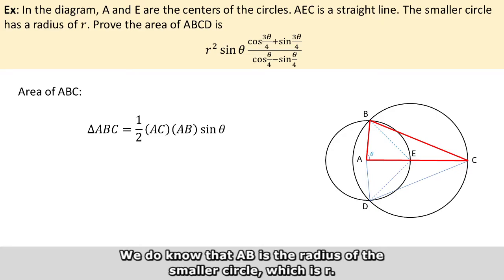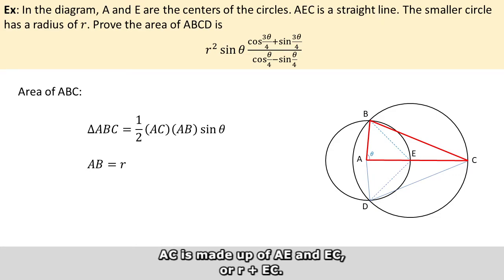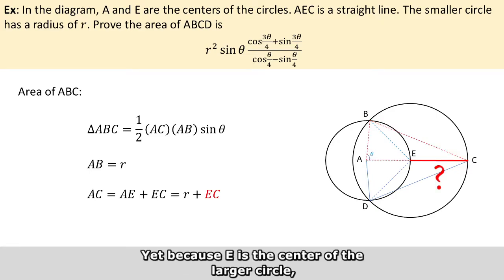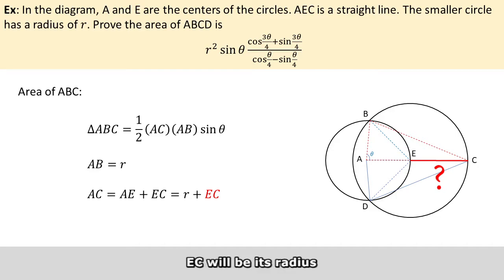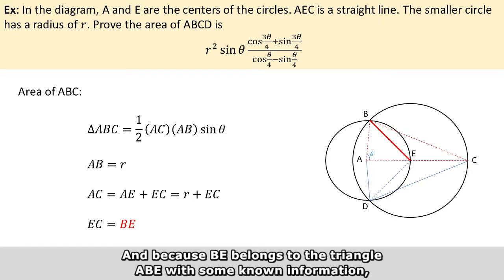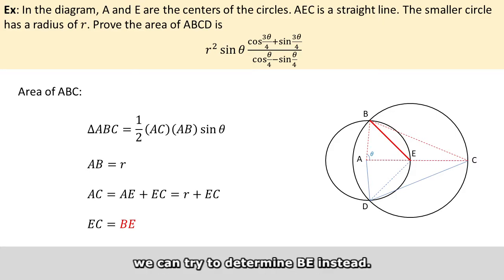We know that AB is the radius of the smaller circle, which is R, whereas AC is made up of AE and EC, or R plus EC. However, we do not know what EC is. Because E is the center of the larger circle, EC will be its radius, which also equals BE since B is on the circumference of the larger circle. And because BE belongs to triangle ABE with some known information, we can try to determine BE instead.